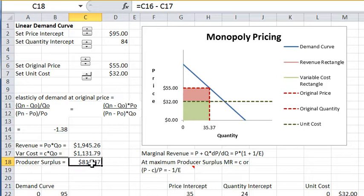So this Producer Surplus, as an example, is the difference between this Revenue, which itself is the product of the Price and the Quantity, and this Variable Cost, which is the Unit Cost times the Quantity.